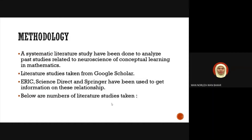For this research, the methodology is a systematic literature study that has been done to analyze past studies related to neuroscience of conceptual learning in mathematics. Those literature studies were taken from Google Scholar, ERIC, Science Direct, and Springer, and have been used to get information on those relationships.